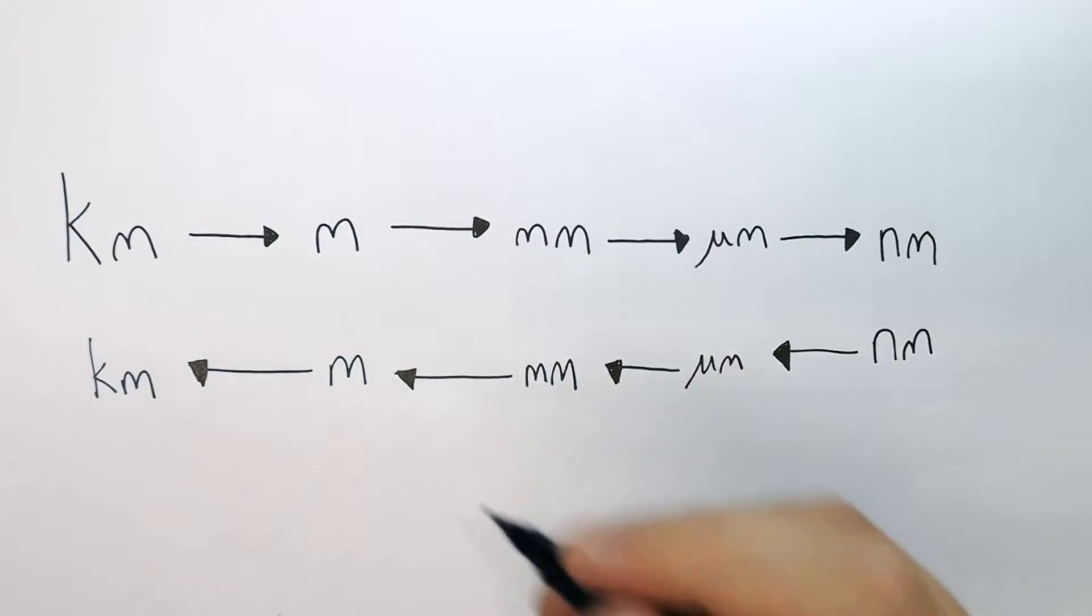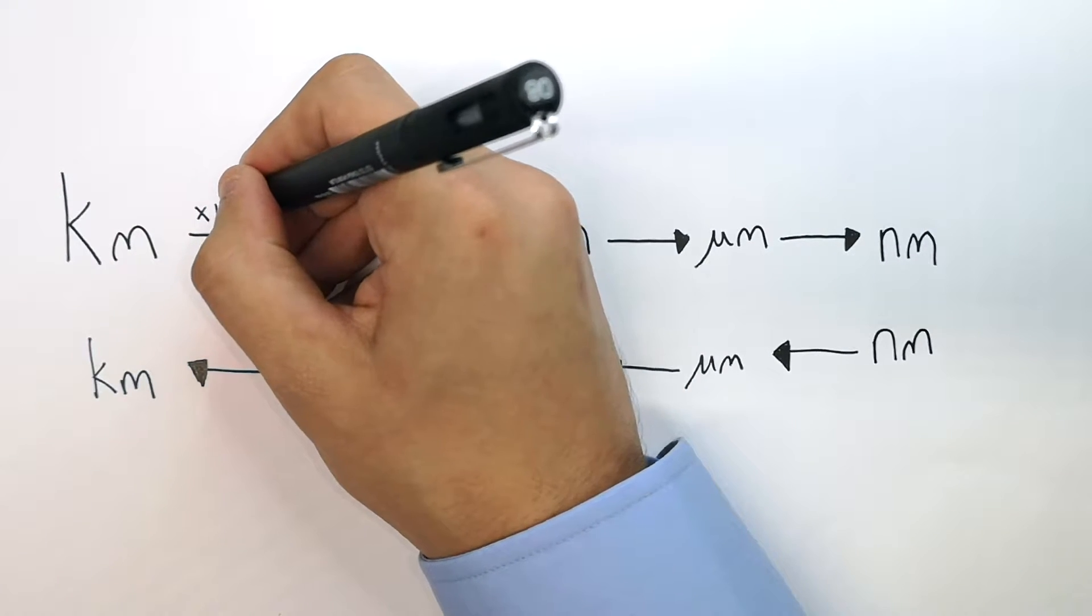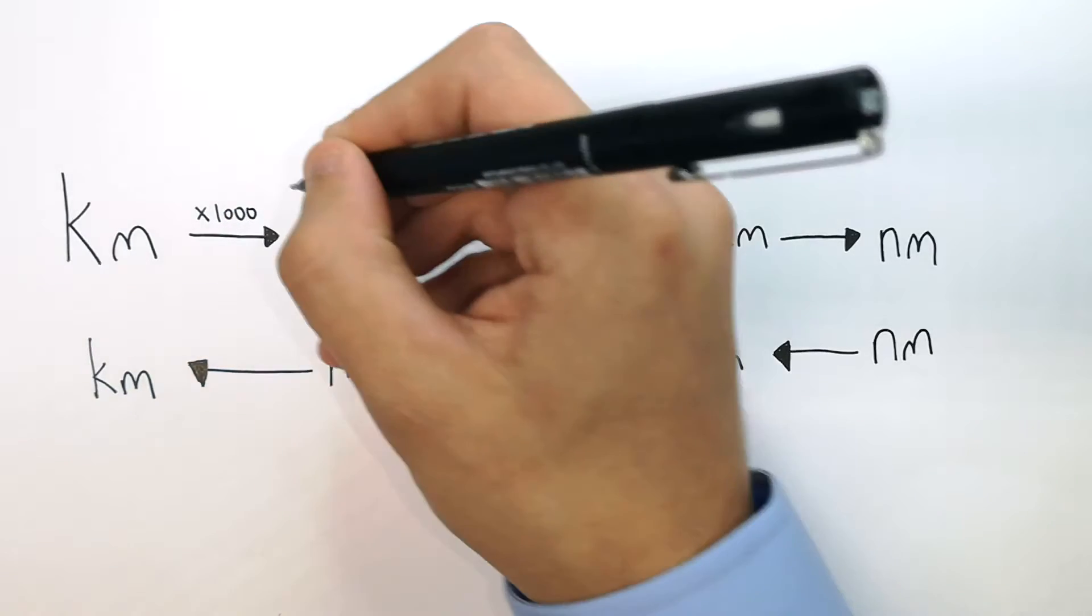We know that one kilometre equals one thousand metres. So to get one kilometre in the unit of metres, you times by one thousand.